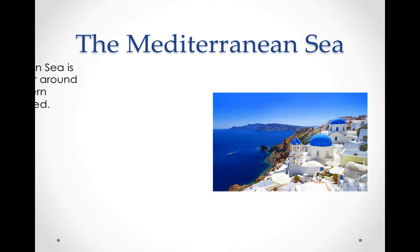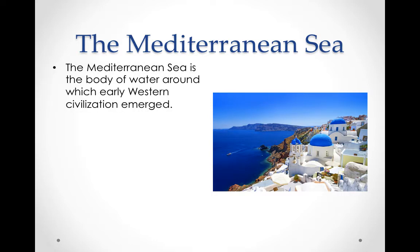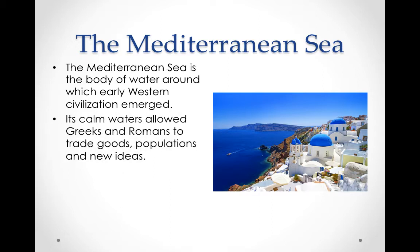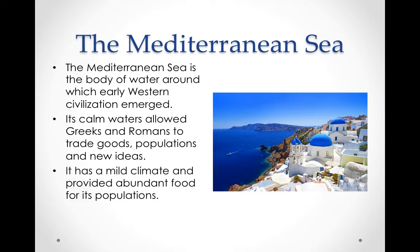The Mediterranean Sea is the body of water around which early Western civilization emerged. It's at the bottom of Europe's coastline. Its calm waters allowed the Greeks and Romans to trade goods — they had very primitive ships and could not go far out to sea, but the Mediterranean is fairly calm, so they were able to trade populations, goods, and ideas. This allowed them to develop their higher civilization. It has a mild climate and produced abundant food for the growing populations.